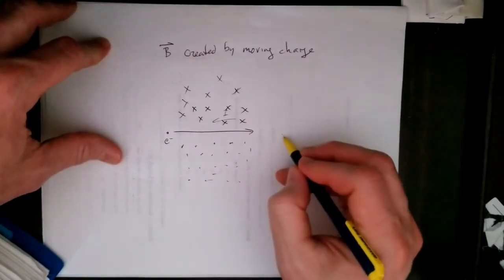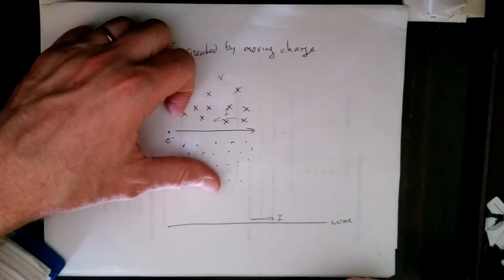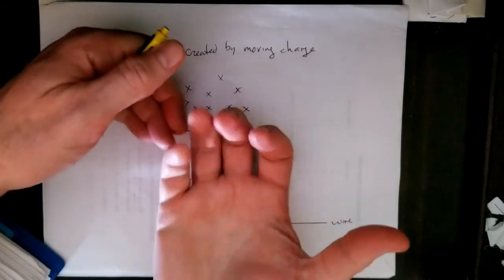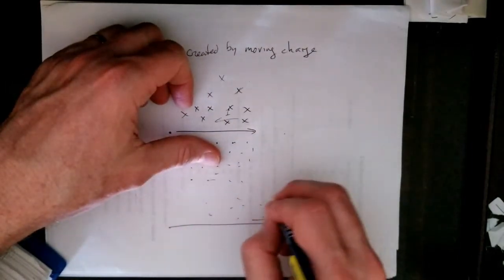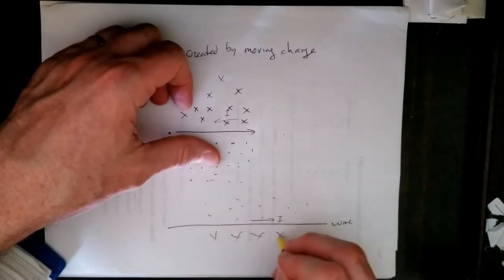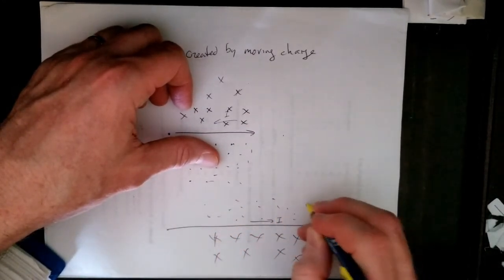Same can be true if I have a wire here. If I have a current flowing to the right, then my magnetic field is coming out of the page on this side, into the page on that side. And I'll be doing dots and X's a lot in this section of the course.